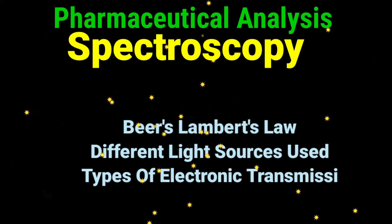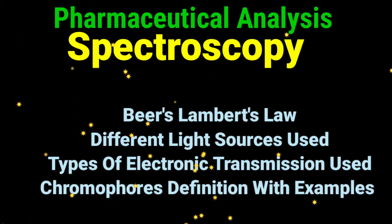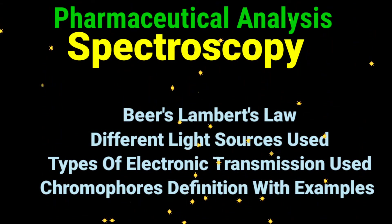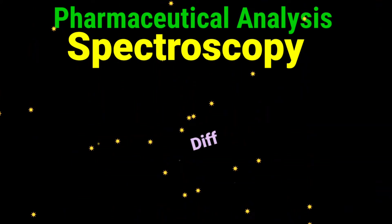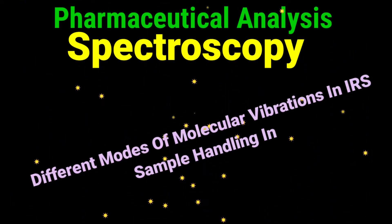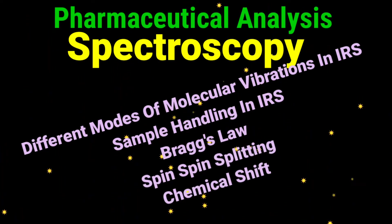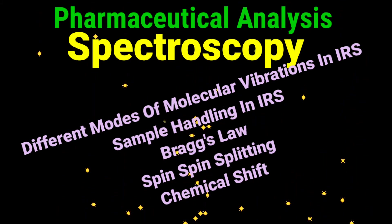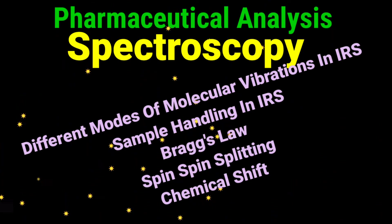Specific important questions in Unit 4 include Beer-Lambert's law, different types of light sources used, different types of electronic transitions, and the definition of chromophores with suitable examples. Also important are different modes of molecular vibrations in infrared spectroscopy, Bragg's law, sample handling in infrared spectroscopy, chemical shift in NMR, and spin splitting or spin-spin coupling.